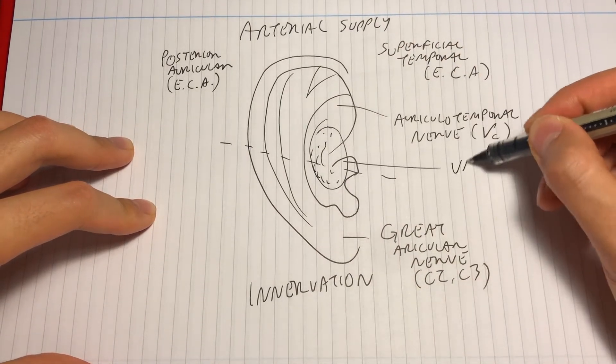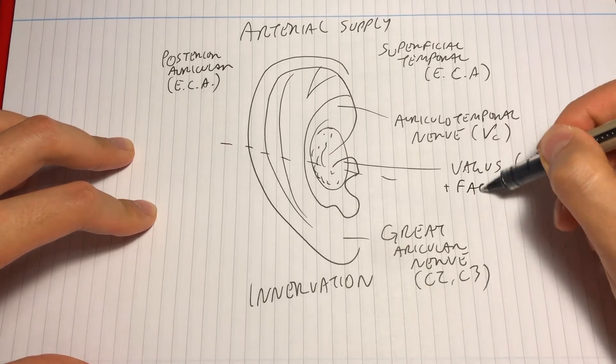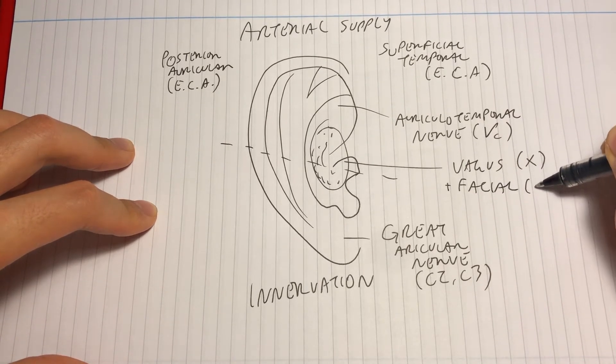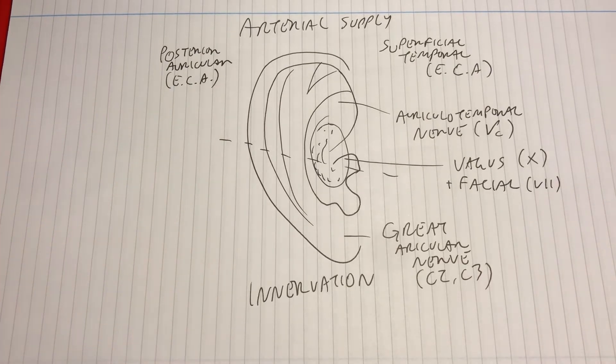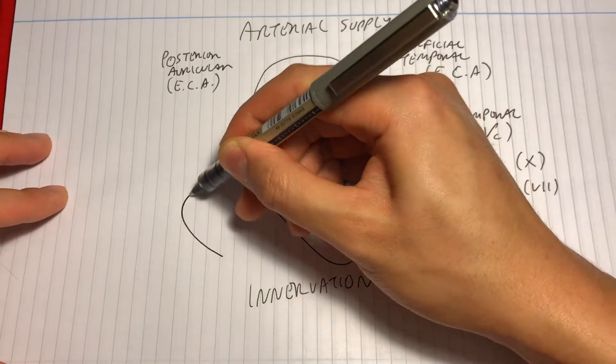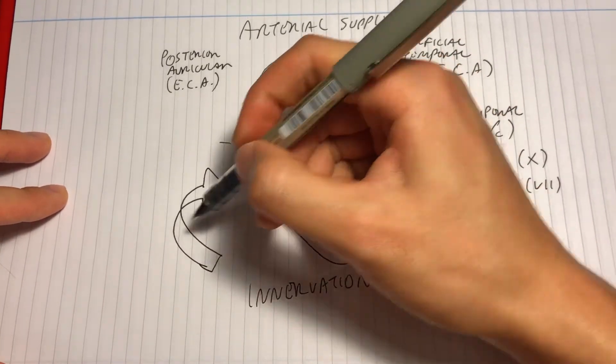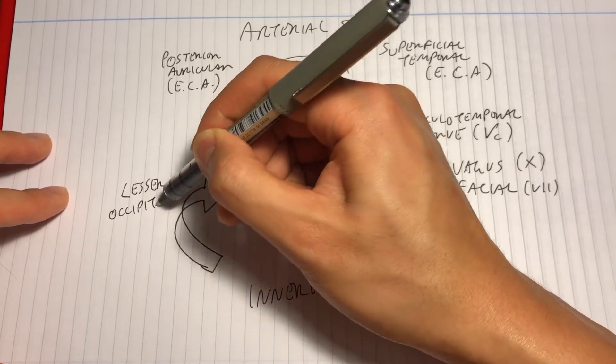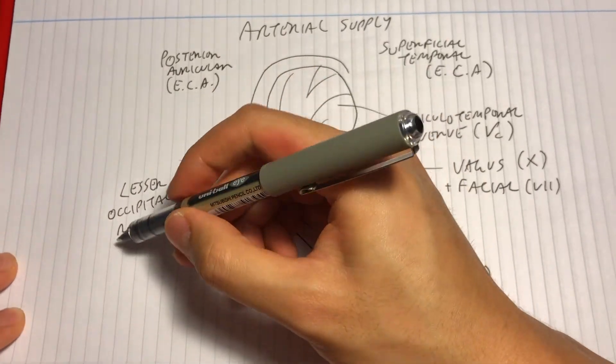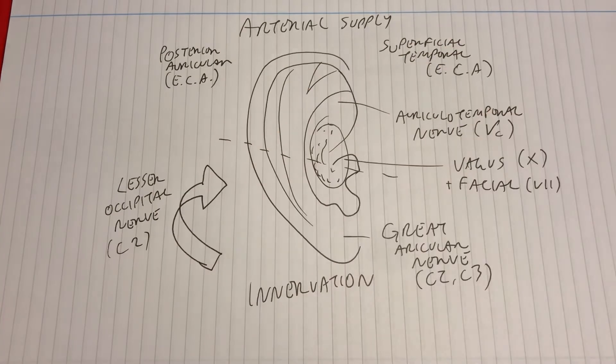Within the concha and around the external acoustic meatus, there are some fibers from the vagus and the facial nerve. This is why in Ramsay-Hunt syndrome, there may be blisters that form in this area.